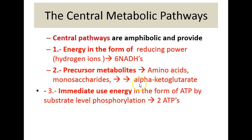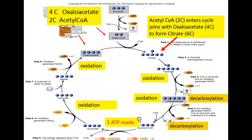Six NADHs per glucose molecule are produced. Precursor metabolites have also been created, especially alpha-ketoglutarate, which is used to make amino acids. Immediate-use energy in the form of two ATP has also been produced. The tricarboxylic acid cycle runs twice per glucose molecule because per glucose molecule two pyruvates are created, which produce two acetyl coenzyme A's, each going through the cycle once.